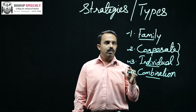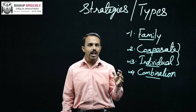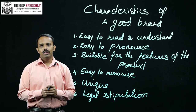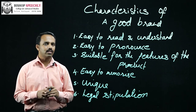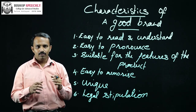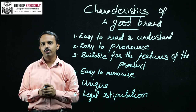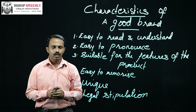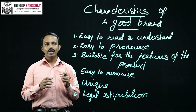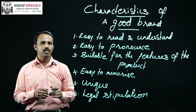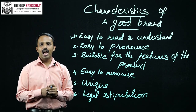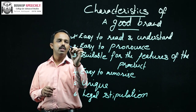So these are the four different branding strategies that firms mainly adopt. Next, we are going to discuss the characteristics of a good brand. At the time of fixing a brand name, term, design, or symbol, the firm needs to consider certain factors so that the brand is attractive, effective, and reaches the minds of customers. The first factor is that the brand should be easy to read and understand. The second one is it should be easy to pronounce.